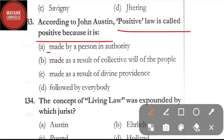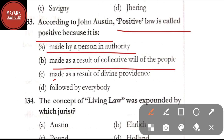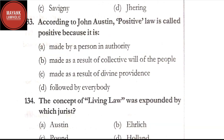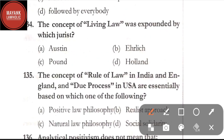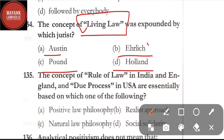Question number 133: according to John Austin, positive law is called positive because it is — option A: made by a person in authority; option B: made as a result of collective will of the people; option C: made as a result of divine providence; option D: followed by everybody. The correct answer is option A, made by a person in authority. Question number 134: the concept of living law was expounded by which jurist — option A: Austin; option B: Ehrlich; option C: Pound; option D: Holland. The correct answer is option B, Ehrlich.